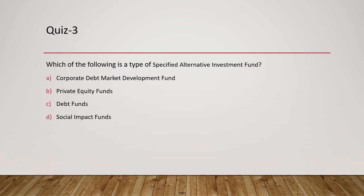Question 3: Which of the following is a type of specified alternative investment fund? Remember we have AIF 1, AIF 2, and AIF 3. The specified alternative investment fund is a distinct category, different from AIF 1, AIF 2, and AIF 3.